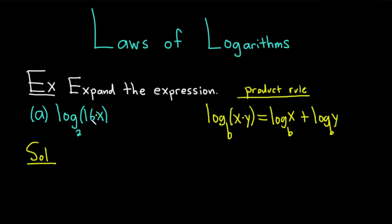So basically, we have multiplication, and it turns into addition. So it becomes the log base 2 of your first factor, 16, plus the log base 2 of your second factor, which is x.